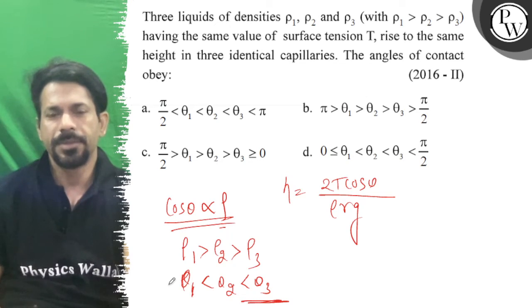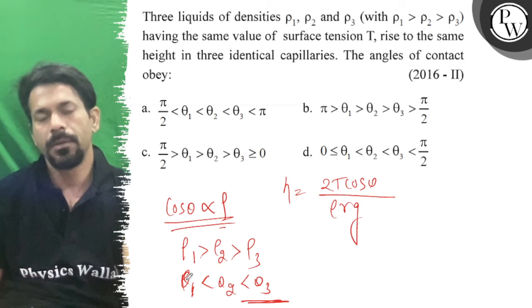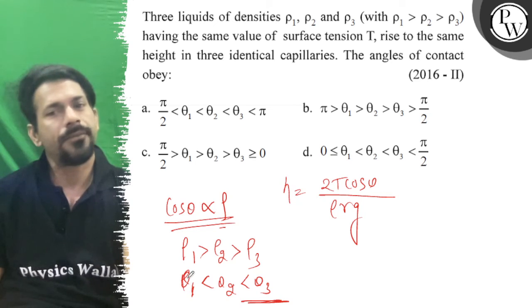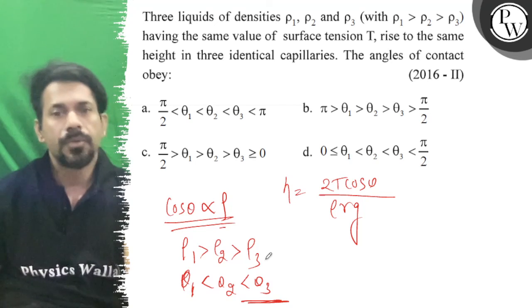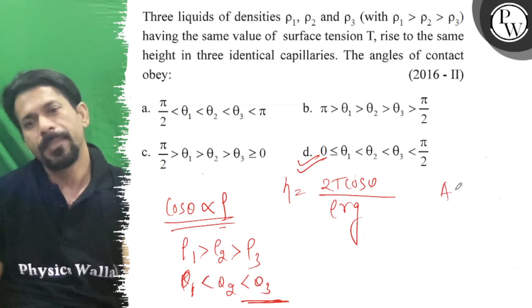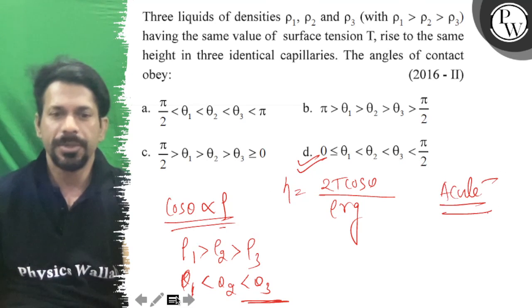So we have the relationship where 0 ≤ θ₁ < θ₂ < θ₃ < π/2. Therefore, option D is correct. All the best.